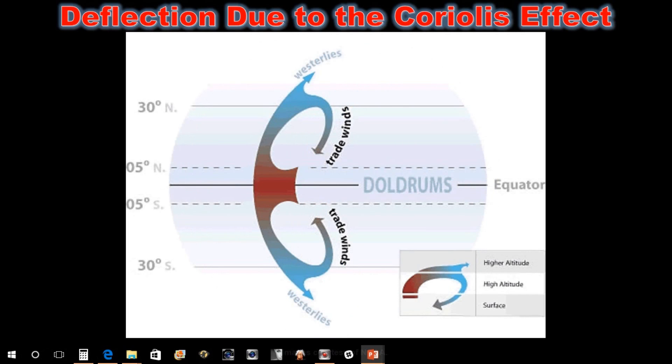These circulation patterns give rise to the global wind patterns including easterlies, westerlies, trade winds, and doldrums. Early sailors were aware of these patterns and used them to drive their ships to new lands in the hopes of discovering new trade routes, hence their name trade winds.